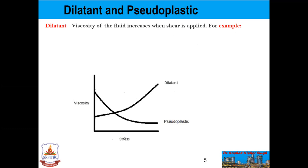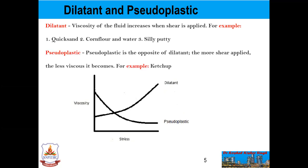Dilatant: the viscosity of the fluid increases when shear is applied. For example, quicksand, cornflour and water, and silly putty. These are examples of dilatant fluids. In the figure, if you increase the viscosity and stress, this kind of behavior is what you get in the case of dilatant. In the case of pseudoplastic, it is just the opposite. Next we will discuss what pseudoplastic is.